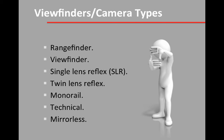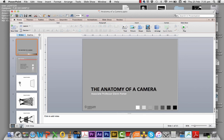These are some of the viewfinder types available with different cameras: rangefinders, viewfinder cameras, single lens reflex, twin lens reflex — though we don't see those anymore — monorail cameras, technical cameras, and now mirrorless cameras. So that's a quick overview on the anatomy of the camera. The purpose of this lecture is to get you familiar with the key components, because in further lectures we'll unpack and examine what those features do and how to control them for a greater level of creativity. Thanks for watching and I'll see you later.